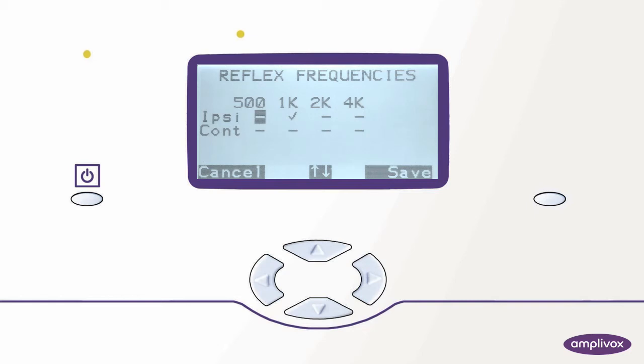In order to toggle through the different frequencies we select the down key and you will notice that every time we select that key we walk through the different frequencies. In order to activate 500 Hz for testing we select the up key and thereby change the line to a tick and the frequency is activated. We continue with 2 and then 4k. We save our changes with the right key.